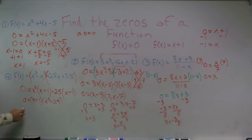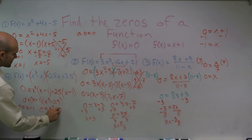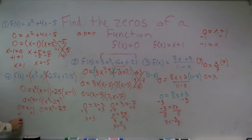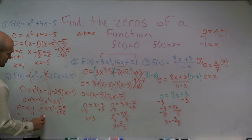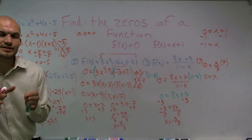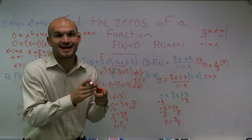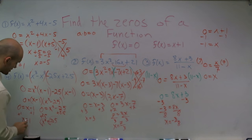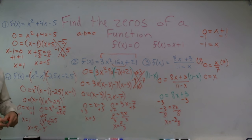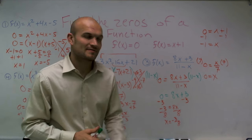Setting both factors equal to 0: 0 equals x minus 1, and 0 equals x squared minus 25. From the first, x equals 1. From the second, I add 25 to get x squared equals 25, then take the square root of both sides — remembering to take both positive and negative roots. So x equals plus or minus 5. Therefore my zeros are x equals 1, x equals 5, and x equals negative 5.